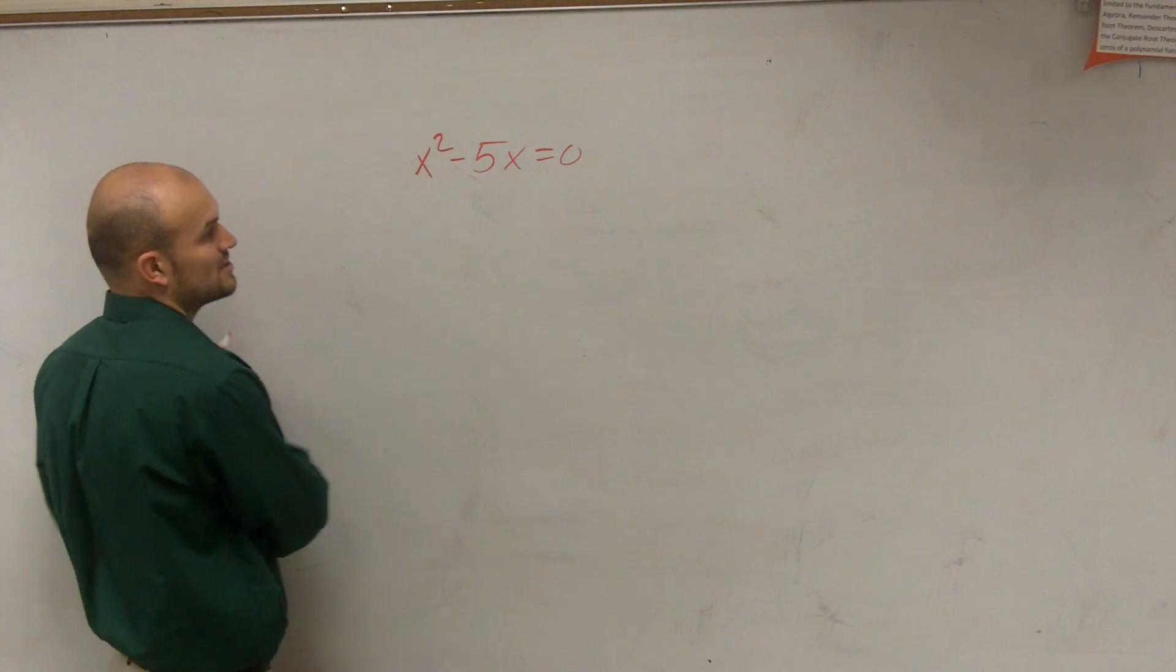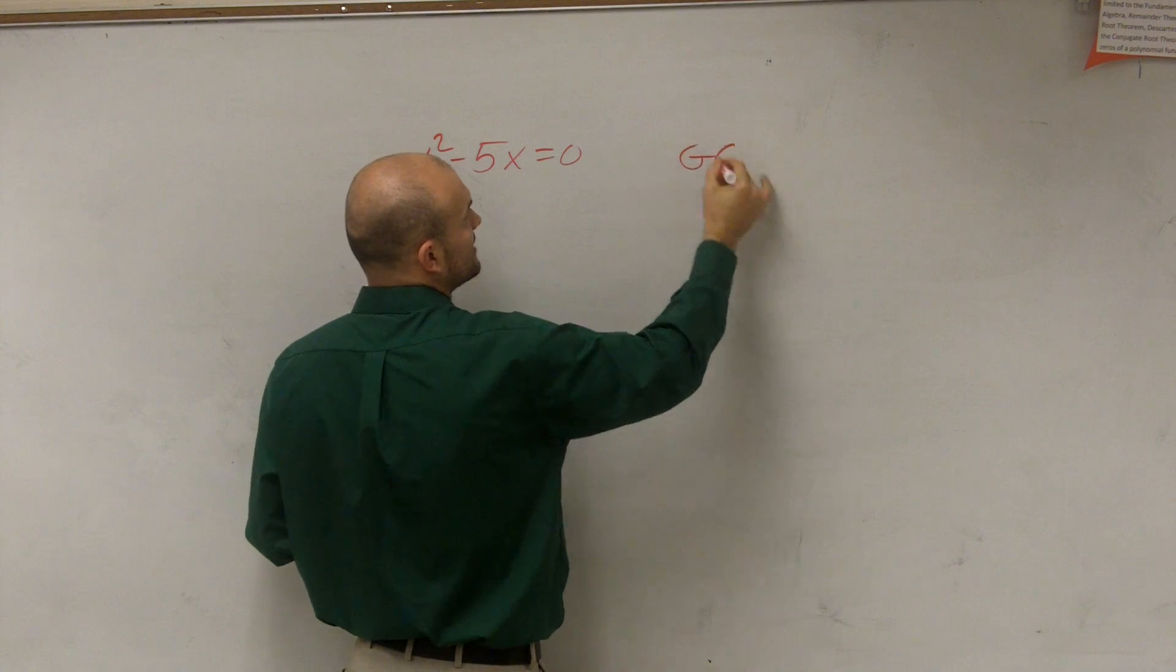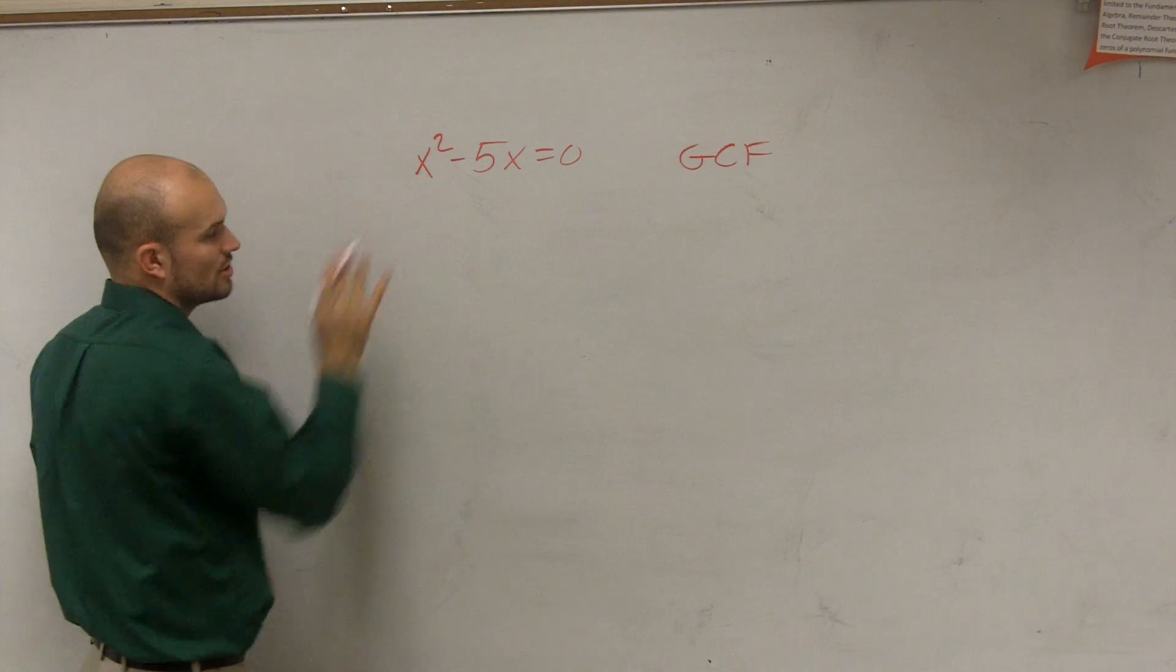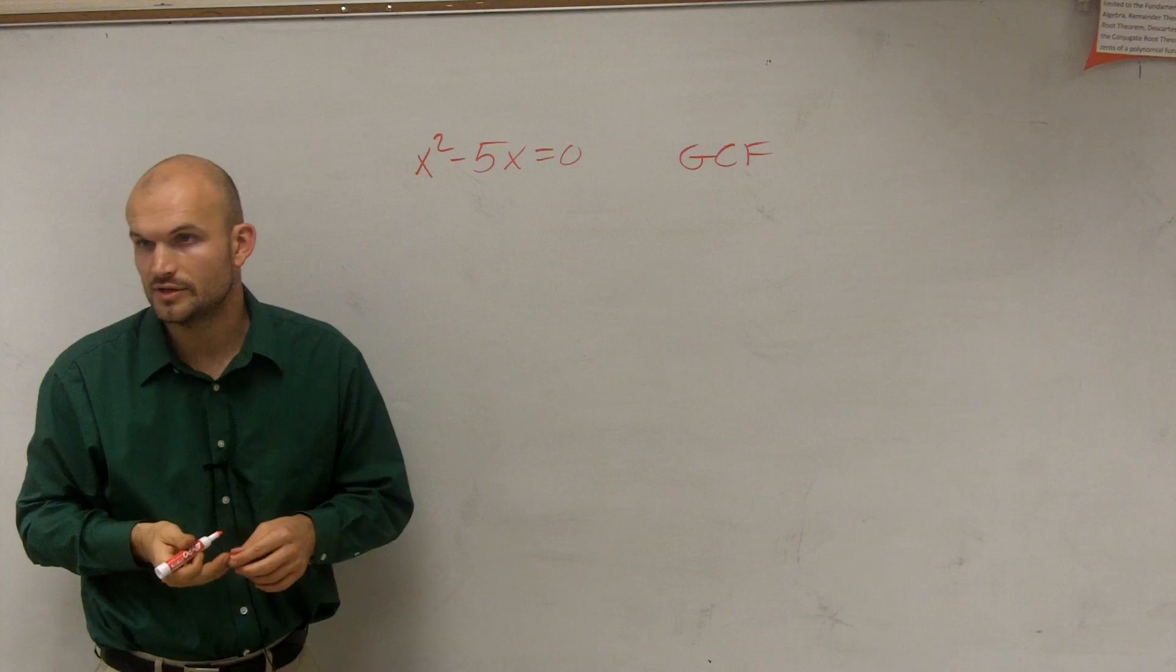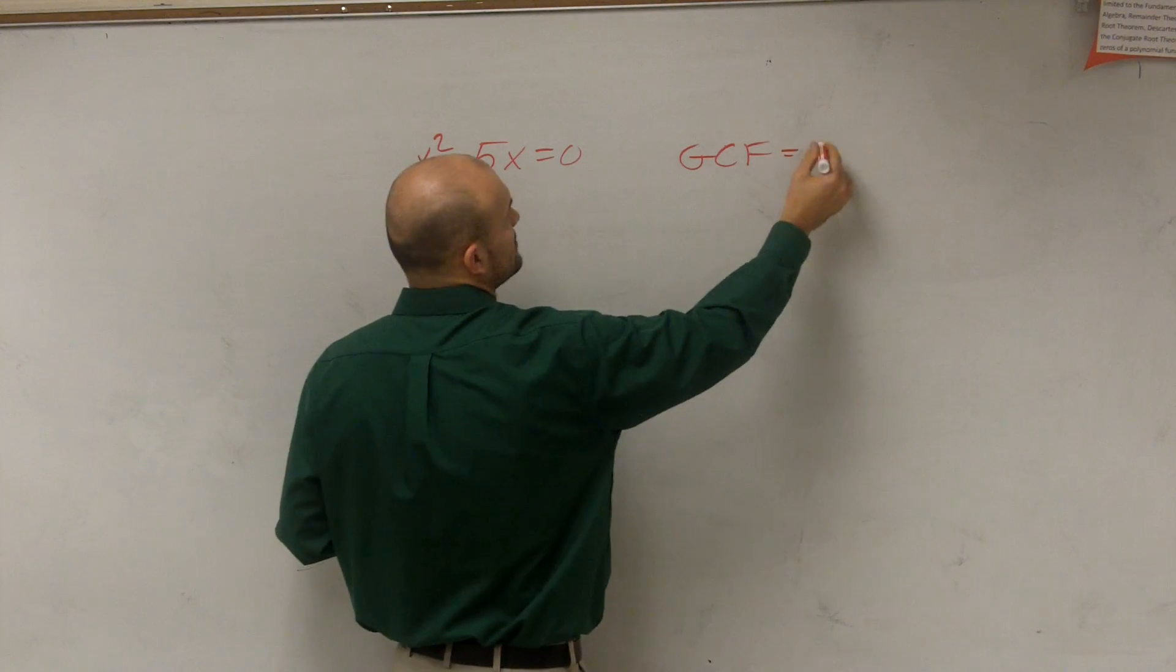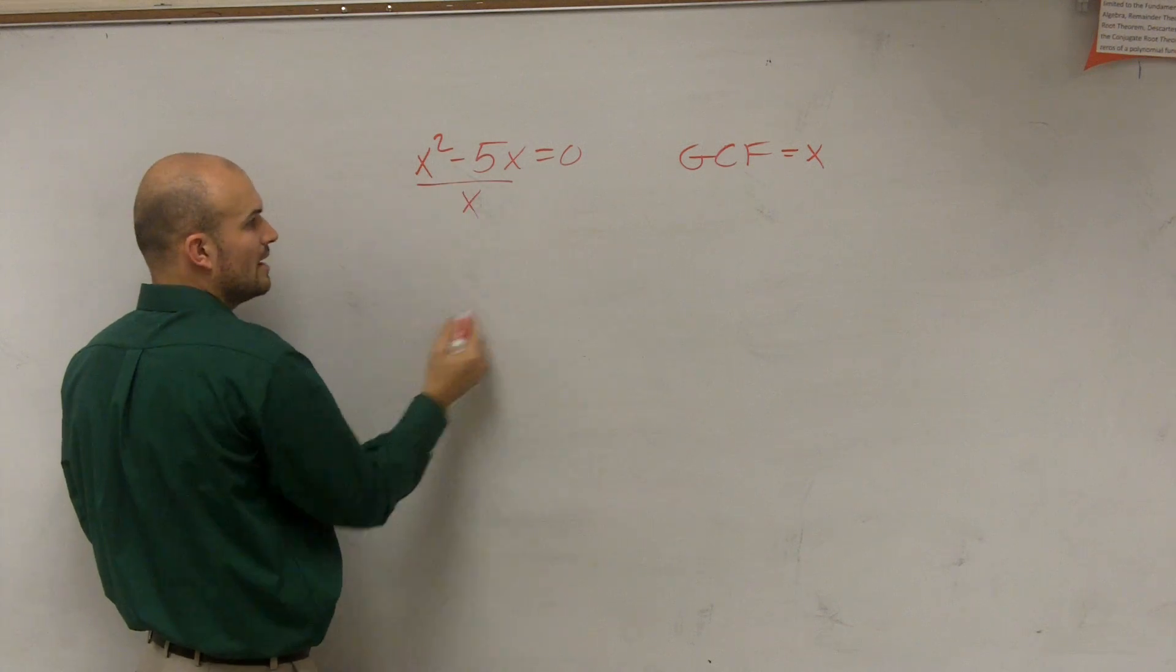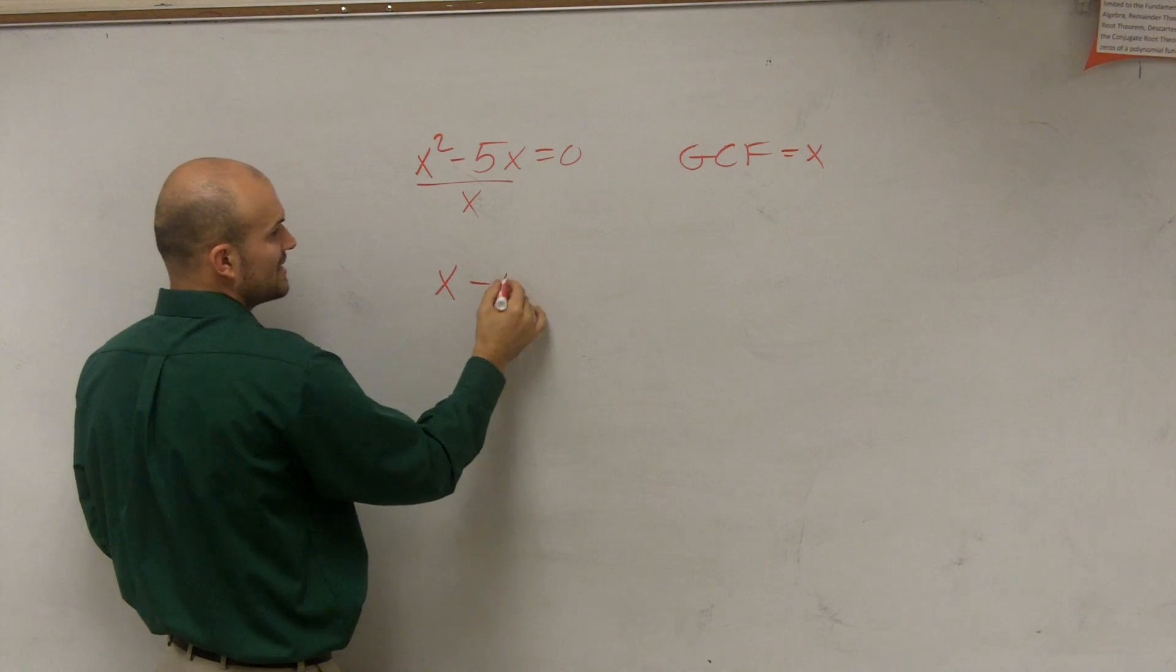So what we do is we have x squared minus 5x. And what we're going to do is, you guys look at it, the first thing we need to find the GCF. So we look at our two terms and see what do they share. And you can say that they both share an x. So we can say the GCF equals x.